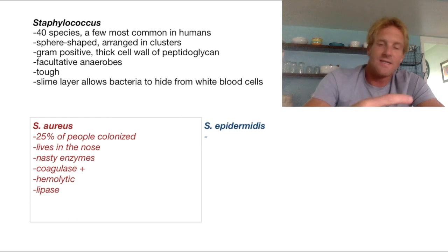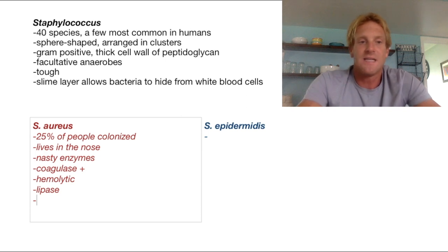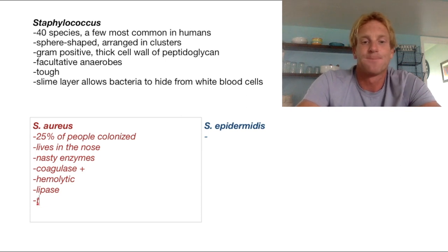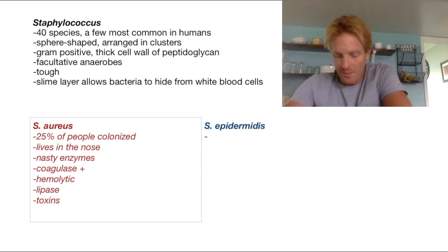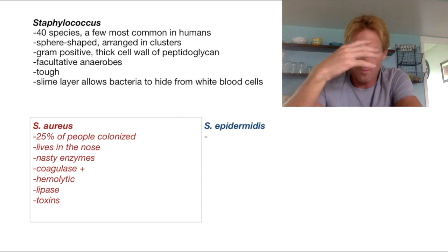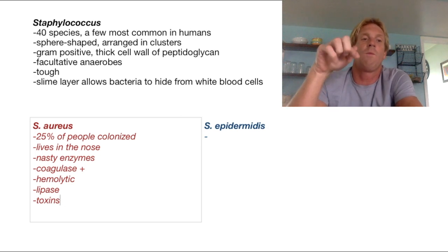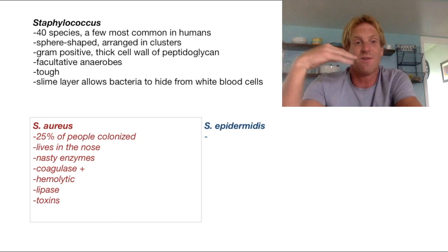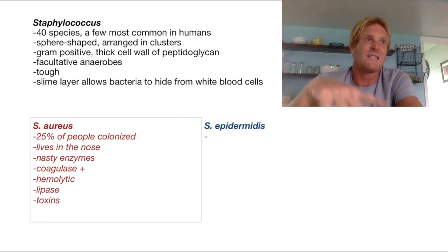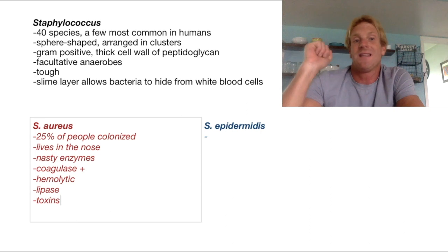In addition to these enzymes, Staph aureus also has some really nasty toxins. A couple of the toxins it contains will kill our white blood cells directly — it secretes these chemicals that kill white blood cells. It also secretes toxins that cause little holes to form in the blood vessels within our skin so that Staph aureus can go into our vessels and travel to different areas. So it's just a really nasty bacteria that can cause problems due to these enzymes and toxins.